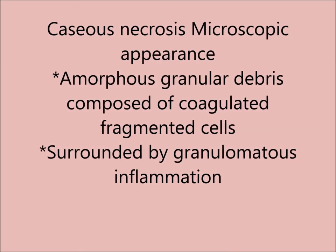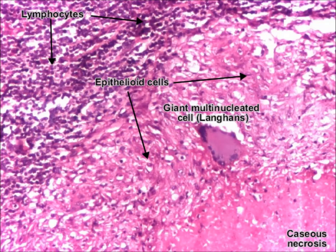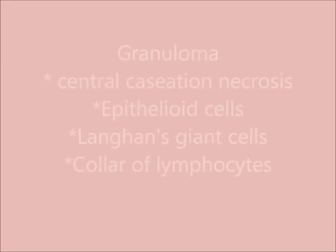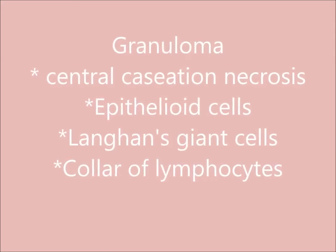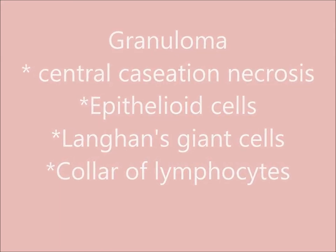Surrounded by granulomatous inflammation, in this microscopic view you can appreciate the caseous necrosis, multinucleated giant cells, epithelioid cells, and surrounding lymphocytes. A granuloma is a descriptive term: central caseous necrosis, epithelioid cells, Langhans giant cells, and a collar of lymphocytes.